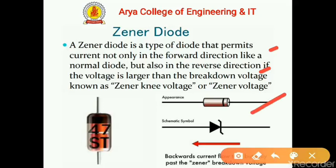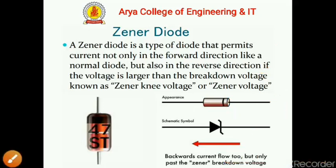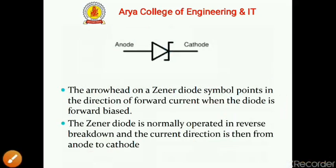This is the physical appearance of the Zener diode. It looks smaller in size than a normal diode, and still has a strip that indicates the cathode point and the anode point. This is the symbolic or schematic diagram, and the arrow shows the backward current flow through the Zener diode.